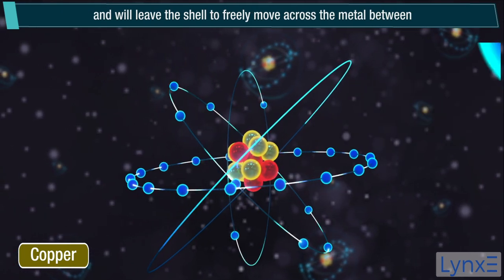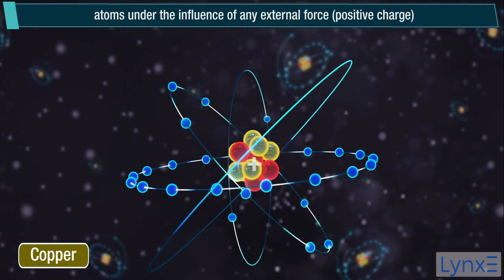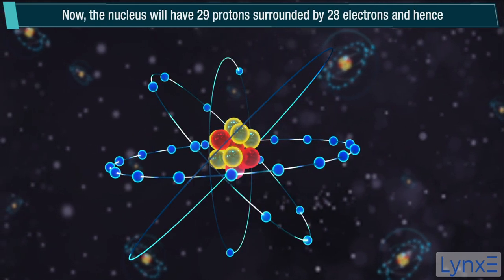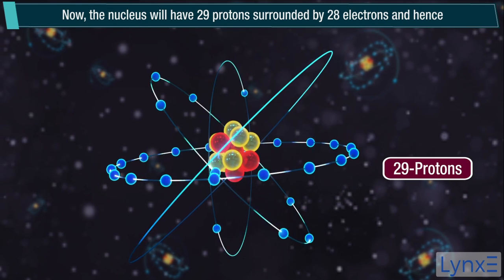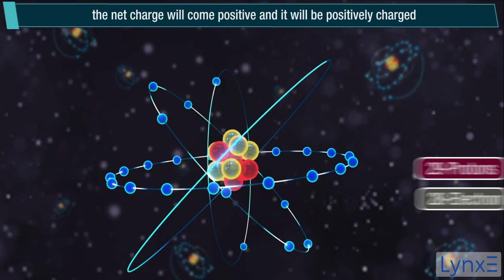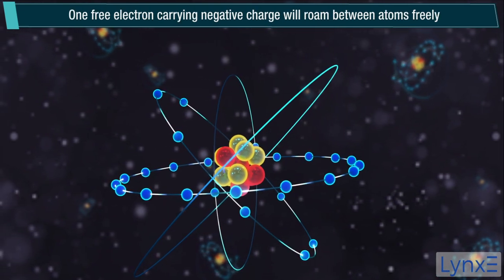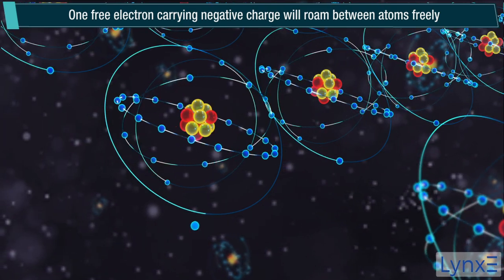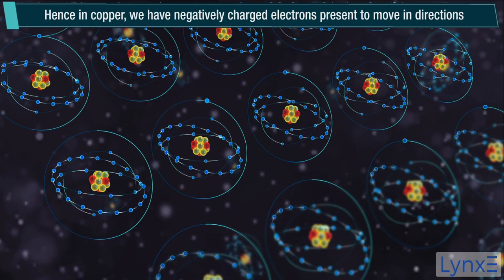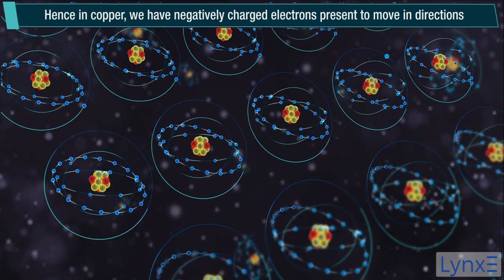And will leave the shell to freely move across the metal between atoms under the influence of any external force positive charge. Now, the nucleus will have 29 protons surrounded by 28 electrons, and hence the net charge will come positive and it will be positively charged. One free electron carrying negative charge will roam between atoms freely under any influencing factor or force. Hence, in copper we have negatively charged electrons present to move in directions.